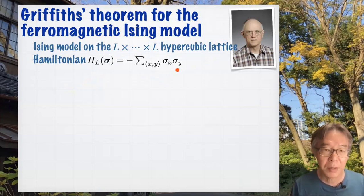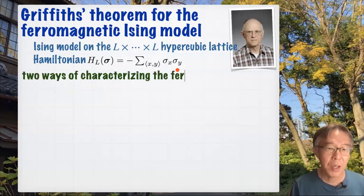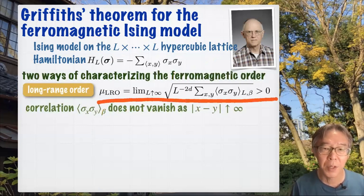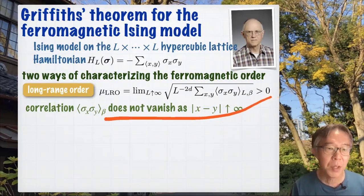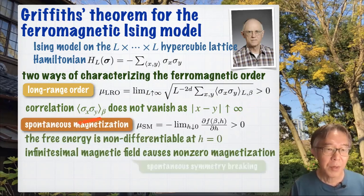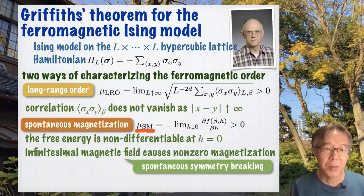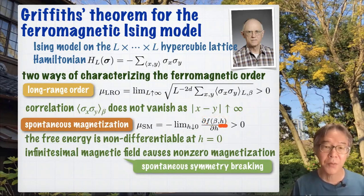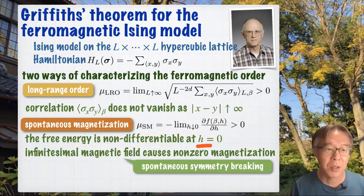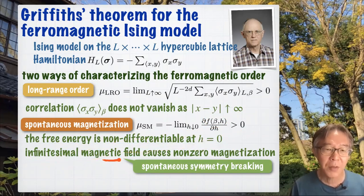The question is, how do you characterize this ferromagnetic order? One standard way is to define the long-range order parameter by summing up the correlation function at zero magnetic field. If this is non-zero, it means the correlation function does not decay. The other famous characterization is spontaneous magnetization, defined as the derivative of the free energy. Physically, mu_sm > 0 means that an infinitesimally small magnetic field can trigger non-zero magnetization — one form of spontaneous symmetry breaking.